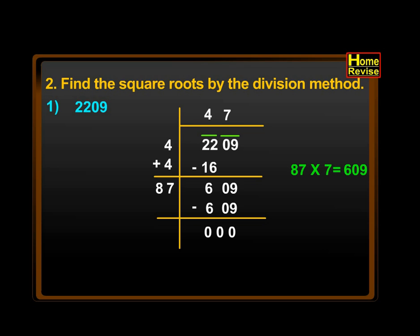Again on the left hand side of the vertical line, the 7 is to be added to 87. 87 plus 7 is 94. Now since we have obtained the remainder as 0, the process of finding the square root is completed. The answer is 47. Therefore, the square root of 2209 is 47.